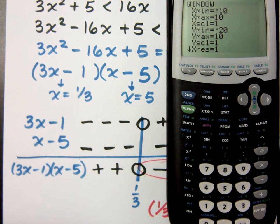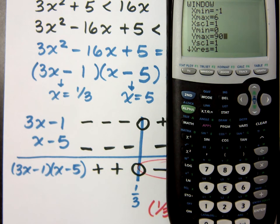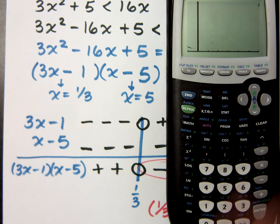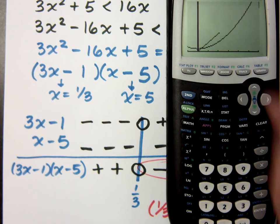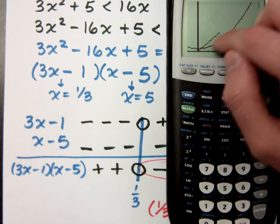Let's change the window. X minimum, let's make that -1. X max, let's make that 6. And y minimum, let's make that 0. And the y max, we're going to make that 90 and see what happens. So there's my, this curve right here is your 3x² + 5, and we're about to graph your 16x.